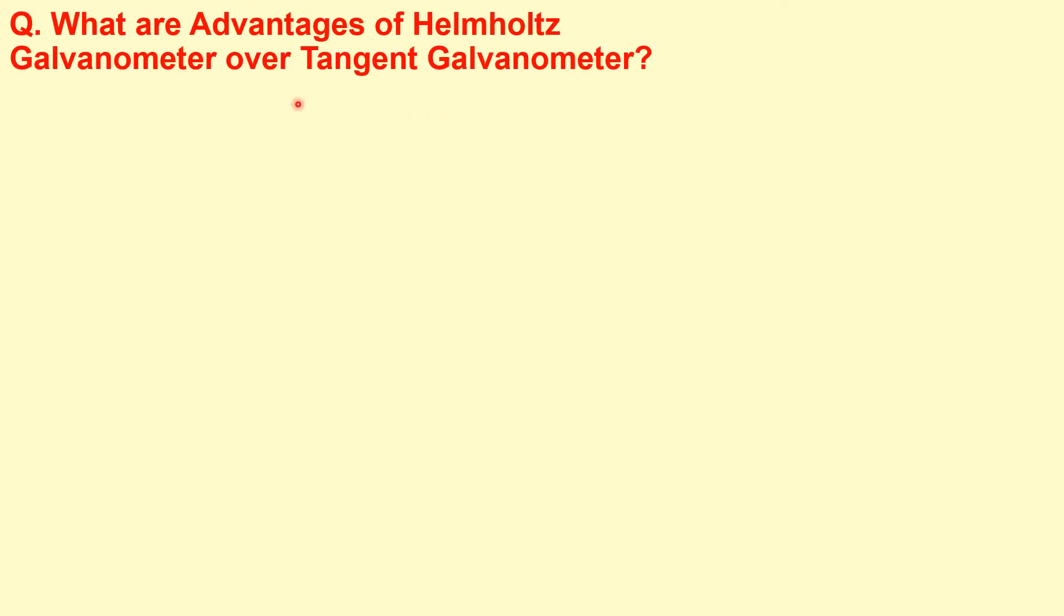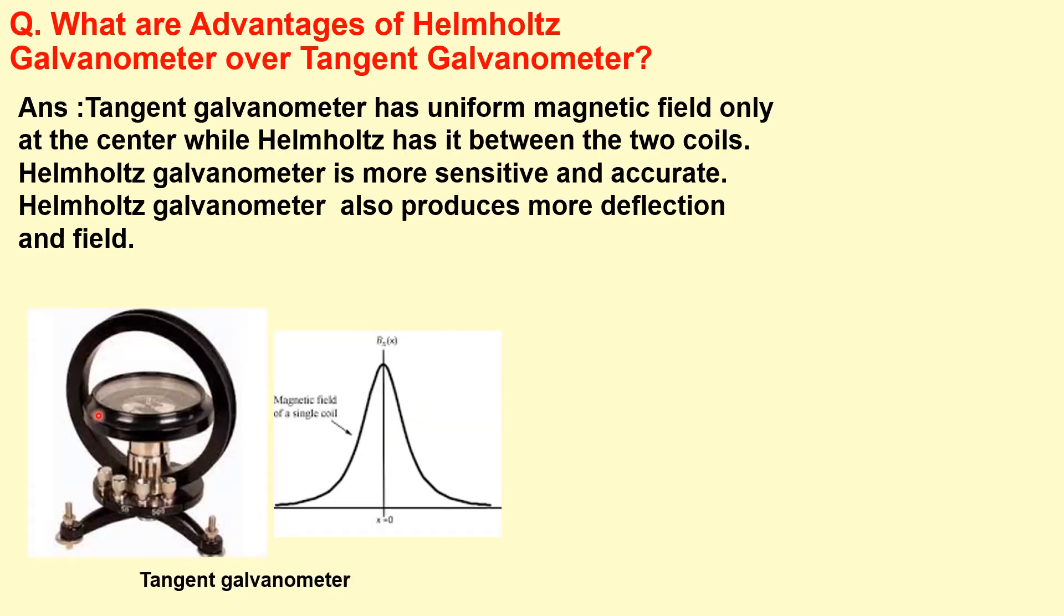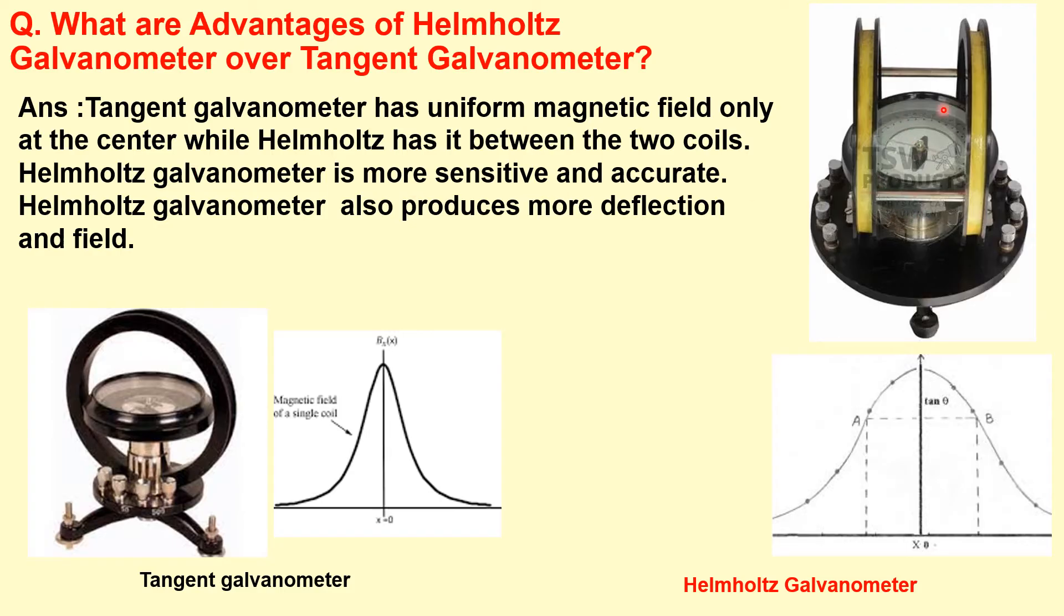Next question is what are the advantages of Helmholtz galvanometer over tangent galvanometer? Tangent galvanometer has uniform magnetic field only at the center. It has only one coil. So it has the constant magnetic field only at the center of the coil. Whereas in case of the Helmholtz galvanometer we have two coils, so the constant magnetic field is up to a large distance. Also Helmholtz galvanometer is more sensitive and accurate as compared to tangent galvanometer and it produces more deflection and field.